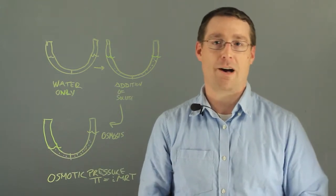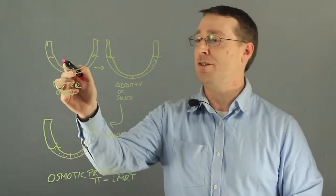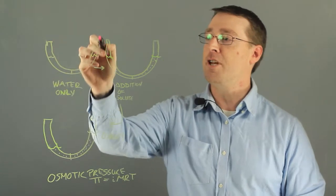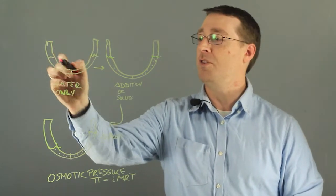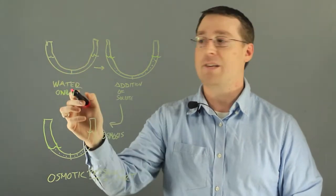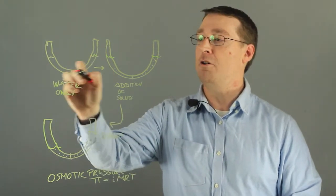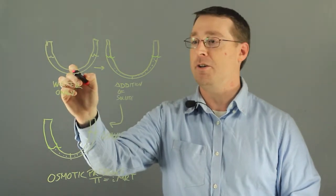How do we define it? Osmosis is described in this graphic here in which we have a U-shaped tube with water that's at equal levels on both sides and these two halves of the tube are separated by a semi-permeable membrane which will allow water to go between the two halves but not any material.